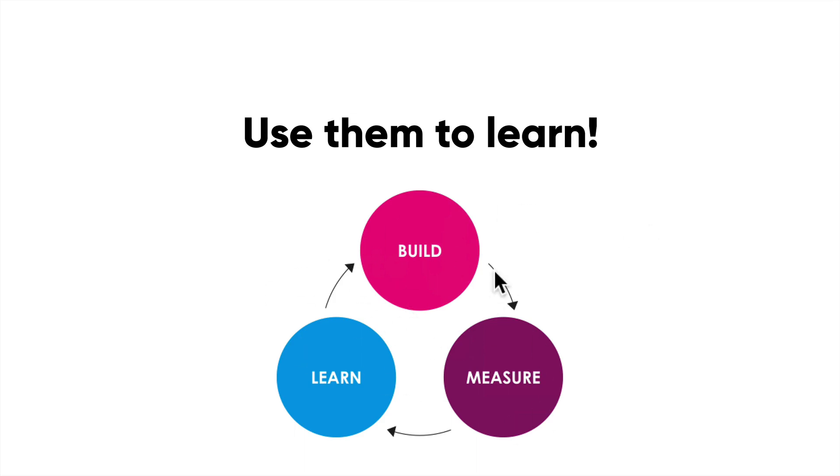Now, the little graph I have here is the build, measure, learn graph. If anyone's read Lean Startup, that's amazing because it's an amazing book. But if you haven't, you should definitely read Lean Startup. It talks a lot about building, measuring, and learning. So what that essentially means is you build, and that could be a wireframe, that could be a sketch. You measure it against something, what metric you're testing against.